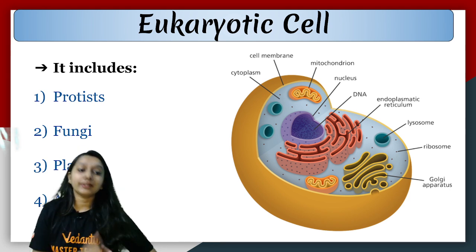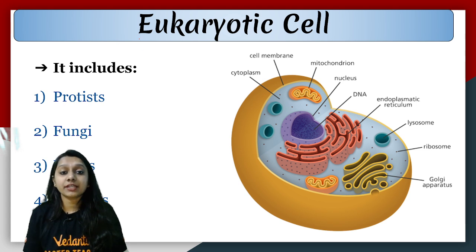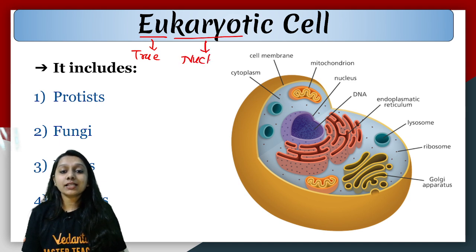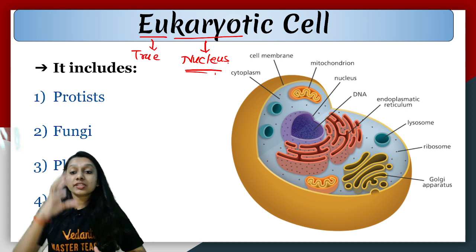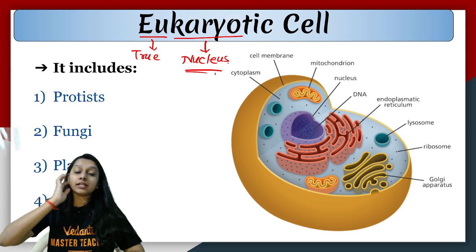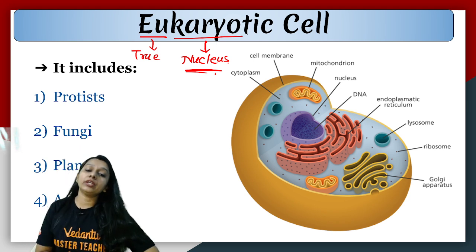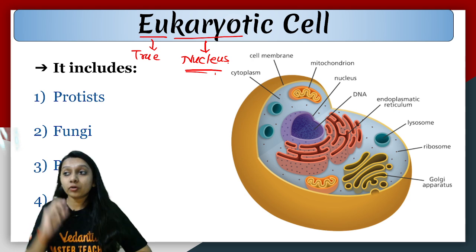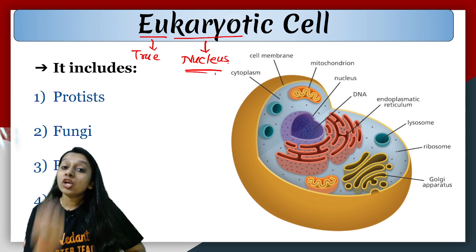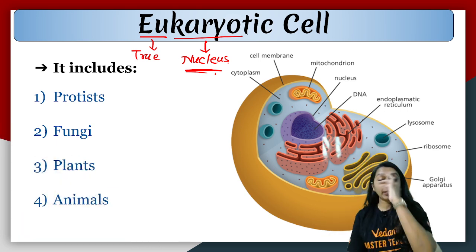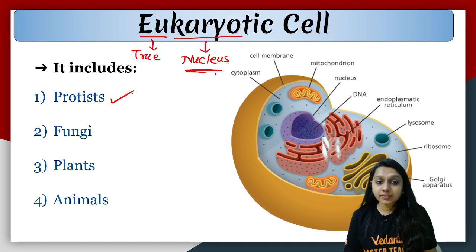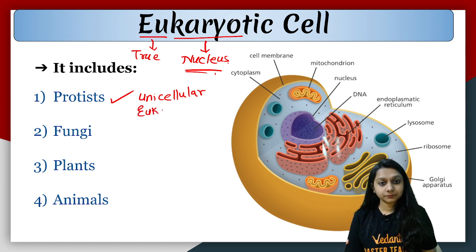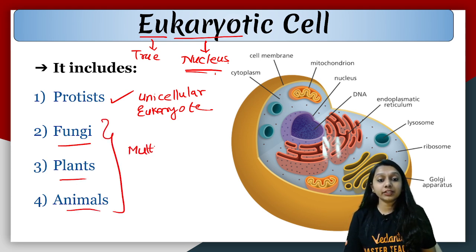Now, eukaryotic cell — from the name itself you can understand: 'eu' means true, 'karyon' means nucleus. So a eukaryotic cell is one which has a true nucleus, where the genetic material (DNA) is surrounded by a nuclear membrane. Eukaryotic cells are well-developed compared to prokaryotes. They are seen generally in Protista, which is unicellular eukaryote, and then in Fungi, Plantae, and Animalia, which are multicellular eukaryotes.